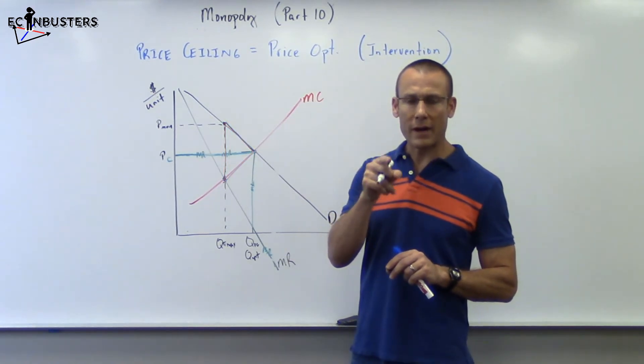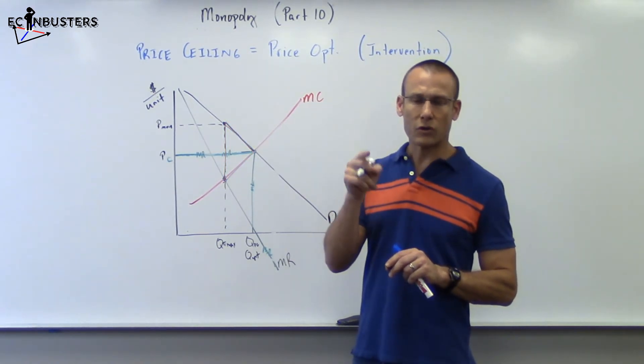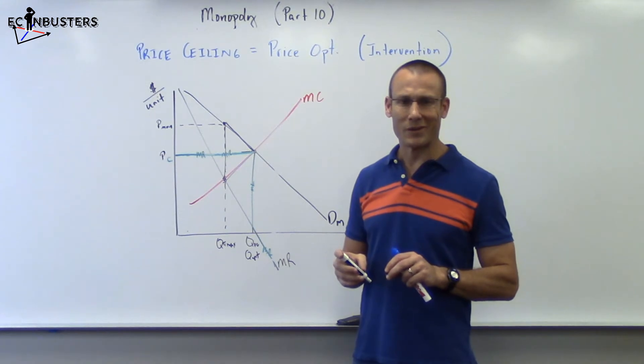Anyhow, hopefully that made sense to you. That's a price ceiling equaling the price opt and it gave us our Q opt. Thanks for tuning in, we'll see you in the next video.